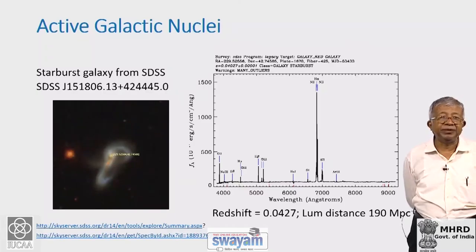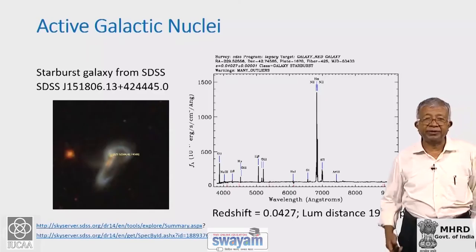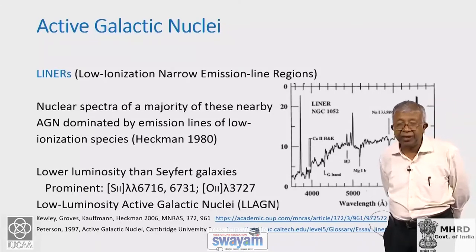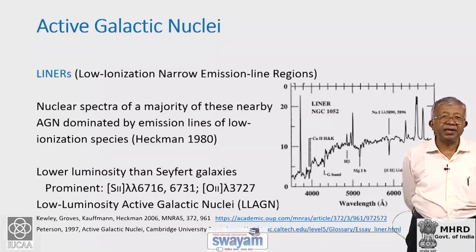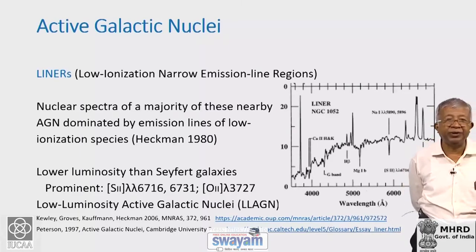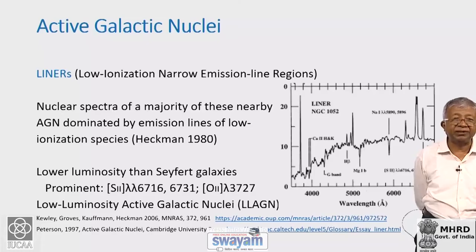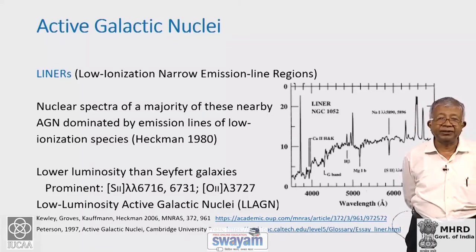This is an example of a starburst galaxy — an interacting pair of galaxies giving rise to a burst of star formation in the centre, and this is the characteristic spectrum of starburst galaxies. Heckman in 1980 pointed out that in many nearby galaxies you find low luminosity emission — these were referred to as low-ionization narrow emission line regions, also called low luminosity active galactic nuclei. They are of lower luminosity than Seyfert galaxies. This is an example of a LINER spectrum, showing prominent lines of [S II] 6717, 6731 and [O II] 3727.